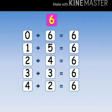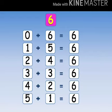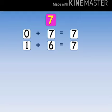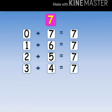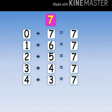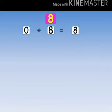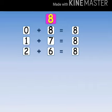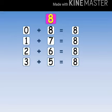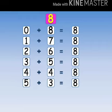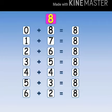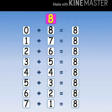4 plus 2 equals to 6, 5 plus 1 equals to 6. Table for 7: 0 plus 7 equals to 7, 1 plus 6 equals to 7, 2 plus 5 equals to 7, 3 plus 4 equals to 7, 4 plus 3 equals to 7, 5 plus 2 equals to 7, 6 plus 1 equals to 7. Table for 8: 0 plus 8 equals to 8, 4 plus 4 equals to 8, 5 plus 3 equals to 8, 6 plus 2 equals to 8, 7 plus 1 equals to 8.